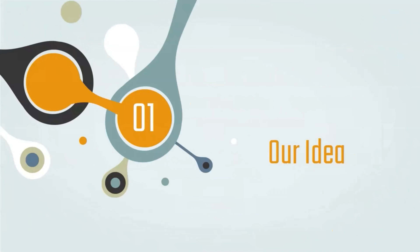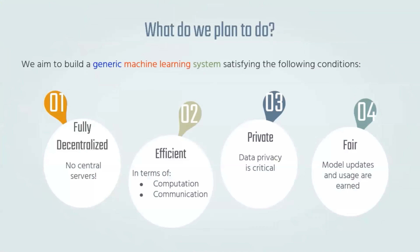Starting with a recap of our idea. We aim to build a generic machine learning system that satisfies the following properties. It should be fully decentralized — no central servers or any single points of failure. It should be efficient in terms of computation and communication load, meeting all constraints with as low a communication overhead as possible. All data used in the system is private; the data of one user isn't shared on the network, neither can it be inferred by any other user, and the system should be fair — only participating users can make use of the system, based on their contribution.